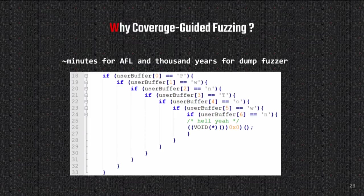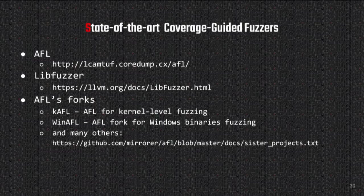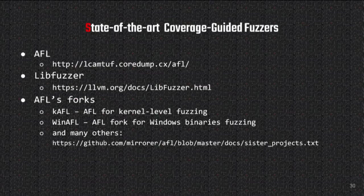Today there are two state-of-the-art fuzzers: AFL and libFuzzer. There are a lot of AFL forks — for example, I really recommend the kernel fuzzer kAFL. And most importantly for us, there is WinAFL, a port of AFL for Windows binaries.